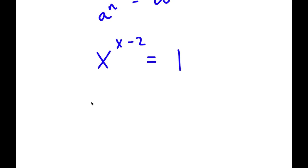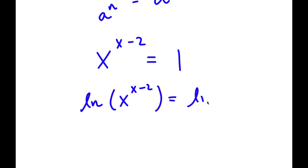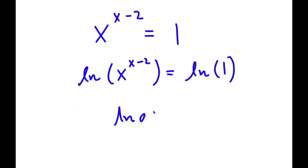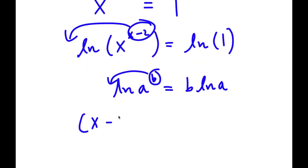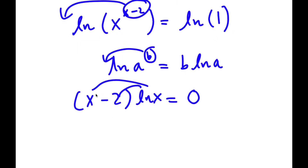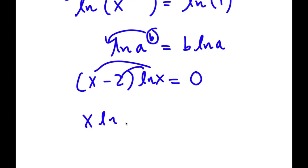Taking the natural log on both sides, I get ln of x to the power of x minus 2 equals ln 1. Using the rule that ln of a to the power of b equals b times ln a, I can move x minus 2 to the front: x minus 2 times ln x equals ln 1, which equals 0. Distributing ln x gives x times ln x minus 2 ln x equals 0.